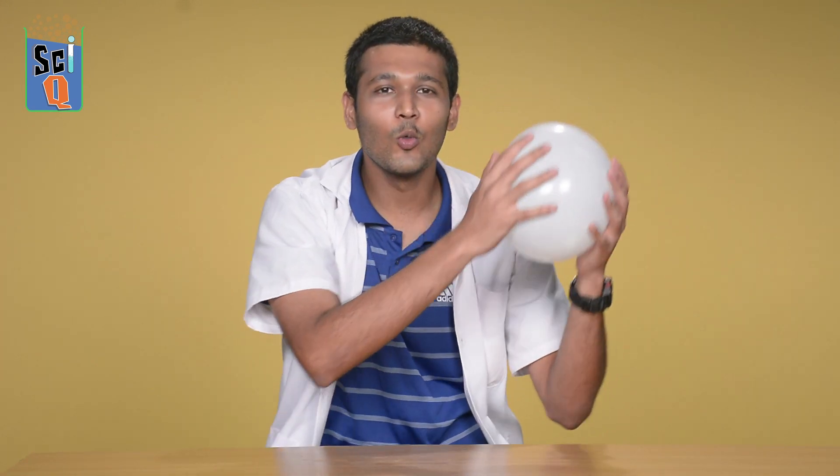Now toss both balloons into the air and try batting them around a couple of times. You'll notice that the blue balloon, the balloon without the coin in it, is easier to move, whereas the balloon with the coin inside is not that easy to control.